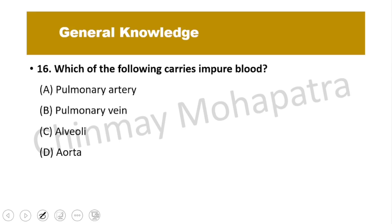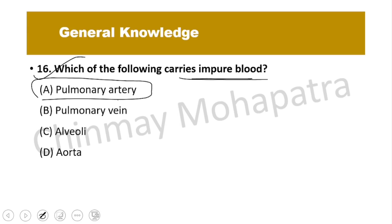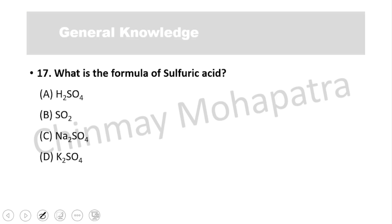Question number 16: Which of the following carries impure blood? The only artery that carries impure blood is the pulmonary artery. All other arteries carry pure blood. Additionally, the pulmonary vein is the only vein that carries pure blood.